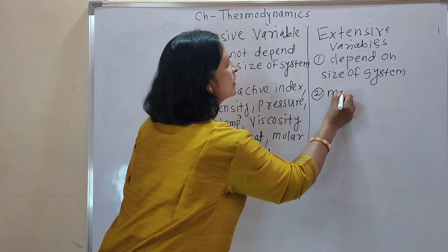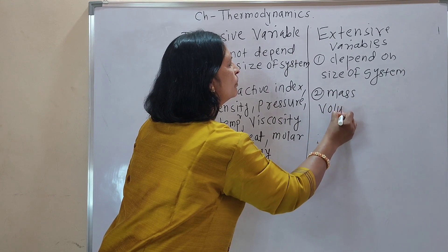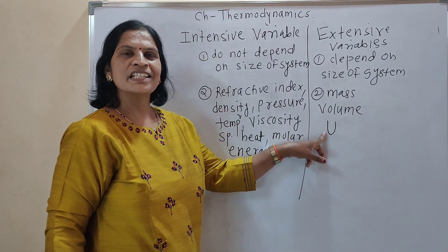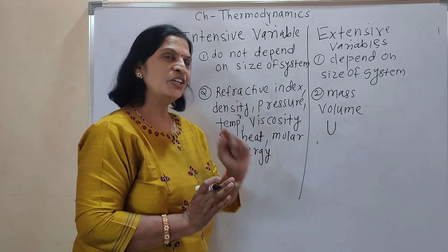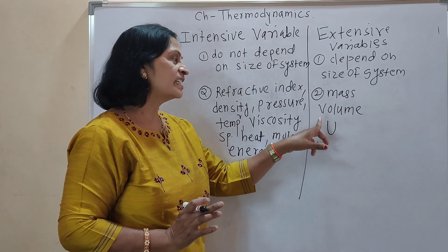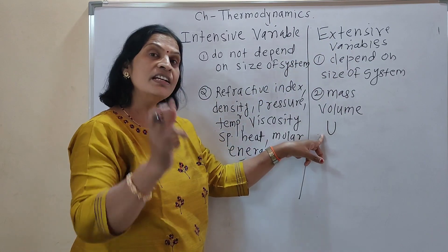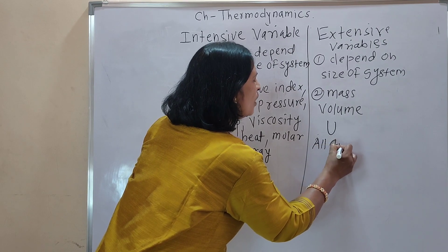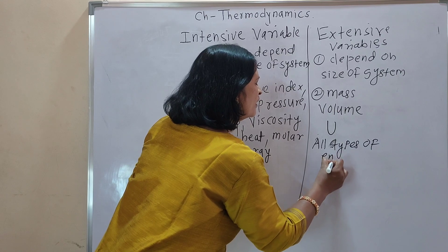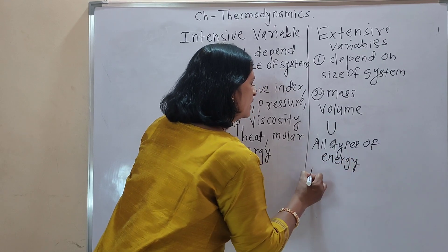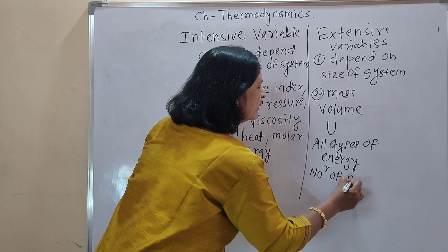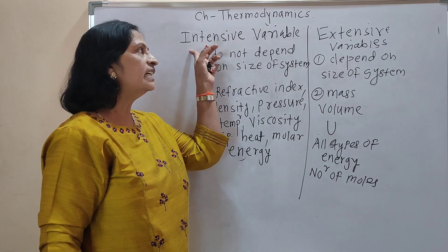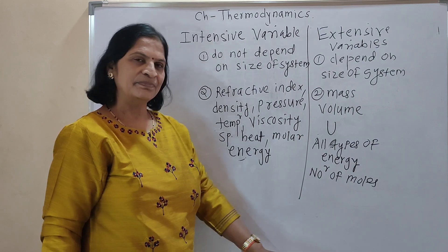Examples of extensive variables are: mass, volume, and internal energy. Internal energy is positive when there is compression and negative when there is expansion — it depends on the size of the system. Also, all types of energy and number of moles depend on the size of the system. This is the difference between intensive and extensive variables.